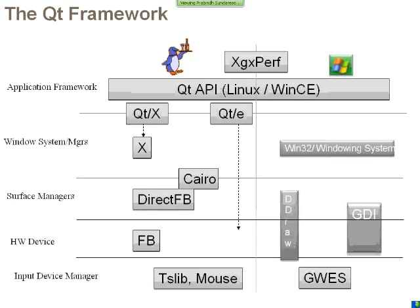Looking at how the software stack looks: there are multiple backend options available for the Qt runtime. I'm showing two options — one on the Linux side and one on the Windows side. On the Linux side there are two options: one called Qt Embedded, which is a simple and lightweight model within Qt that allows you to directly use the frame buffer for its operations along with a simple window manager. The other option is the native X11 backend, which can use backends like XFB or PyRo. On the WinCE side, we have the regular Windows system and the Electra backends.